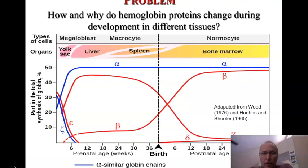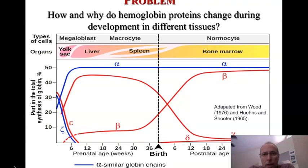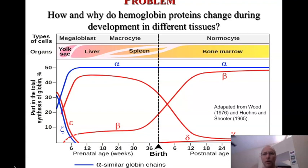Today's lecture starts with a problem that's an example of an issue that's central to essentially all genetics in all different organisms on the planet. In this case, the example we're using is the expression of hemoglobin in a human being. Hemoglobin is the molecule in the blood carried by the red blood cells that carries oxygen and the hydrogen ion primarily to and from the tissues.